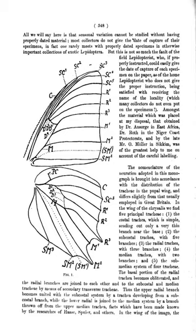Antennomere: segment of an antenna. The term antennomere is used in particular when the segments are fairly uniform, as in filiform antennae, but it also may be used in referring to segments of odd sizes, shapes and functions, such as the scape and pedicel. More specific terms may be used where there are distinct antennal regions; for example, flagellomeres are the antennomeres comprising the flagellum.